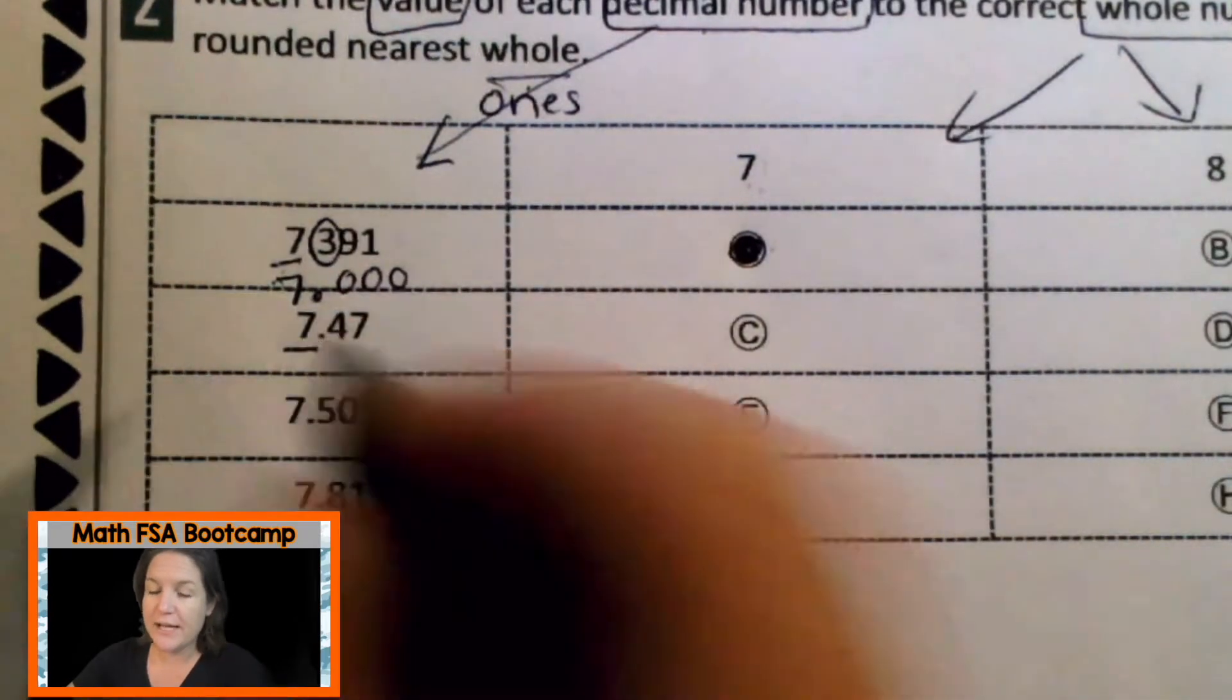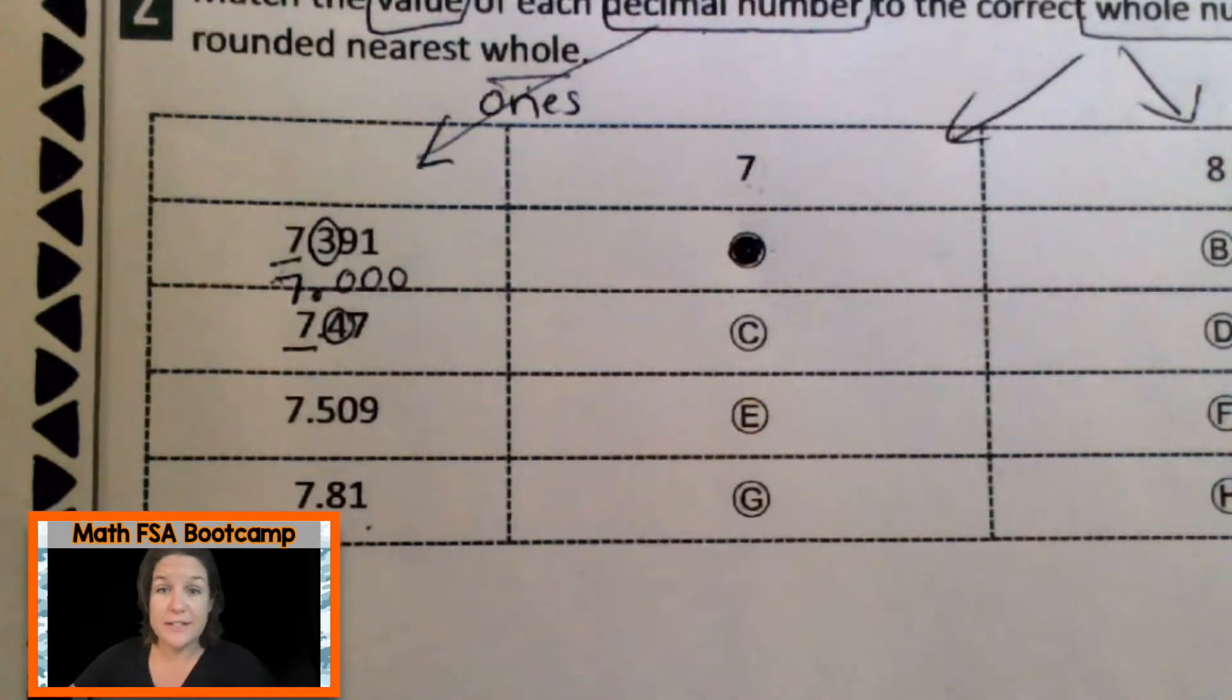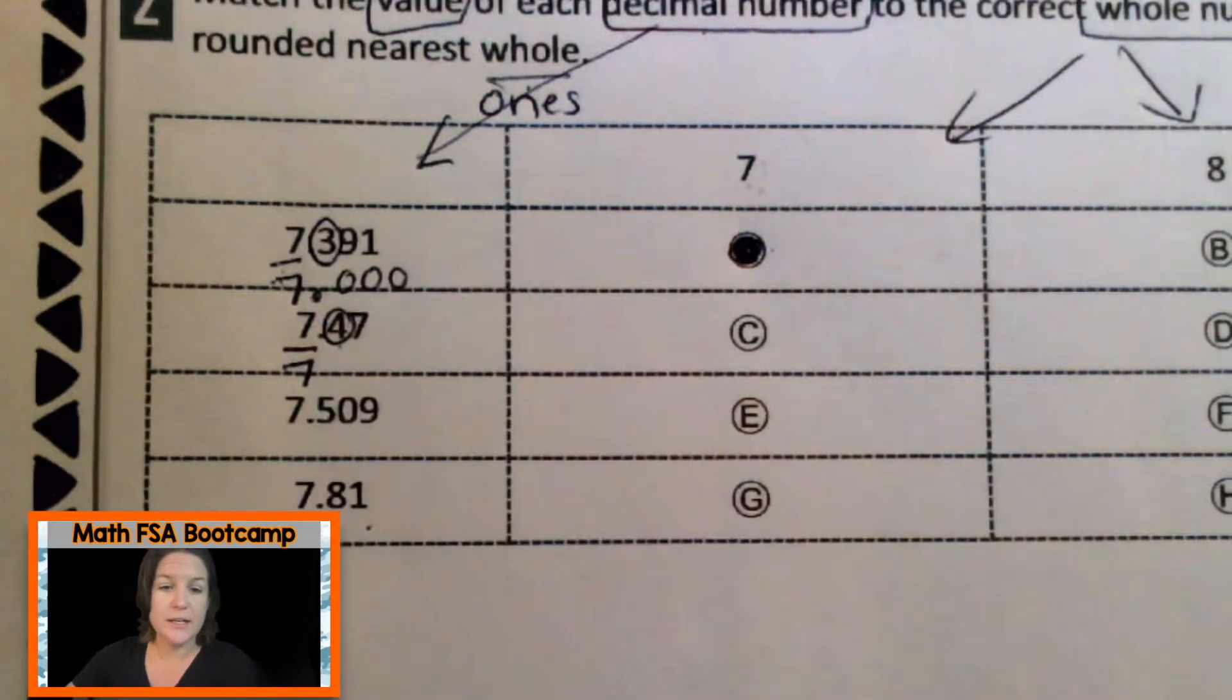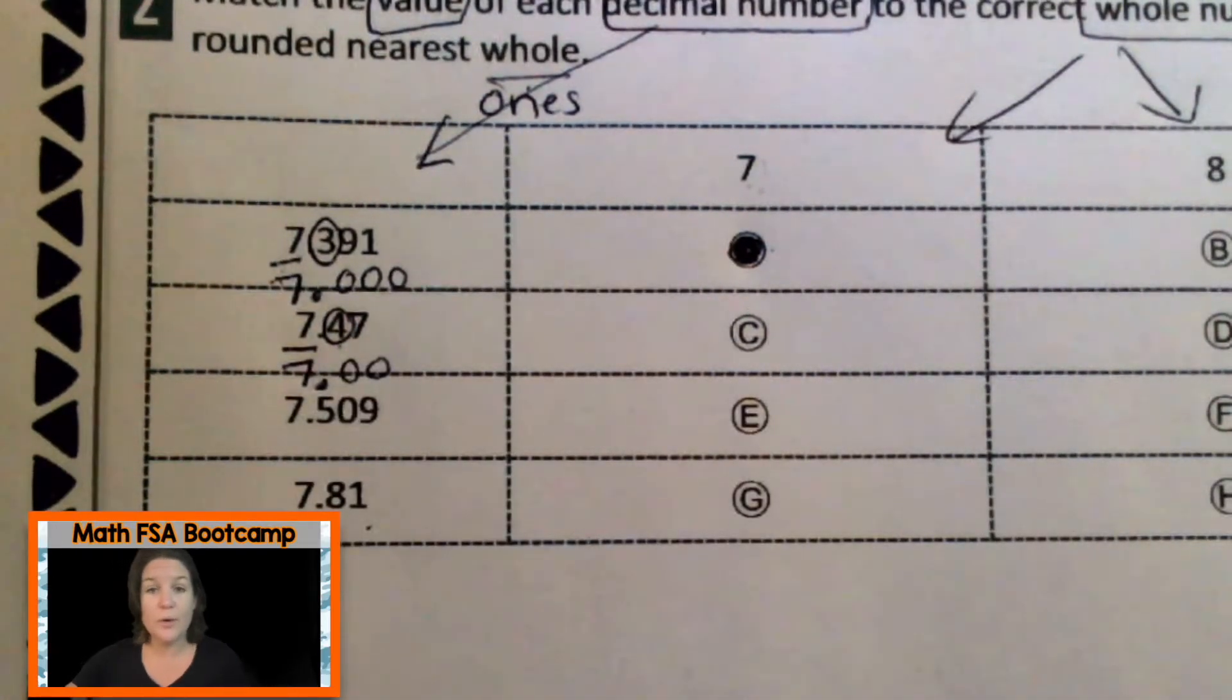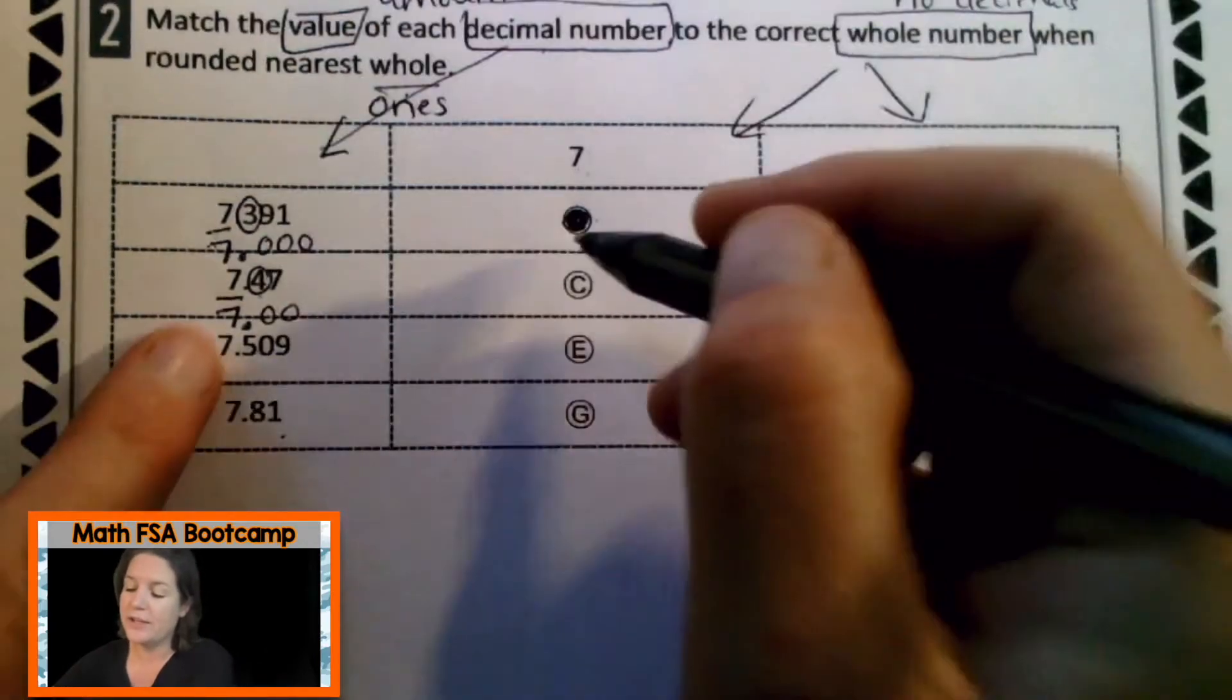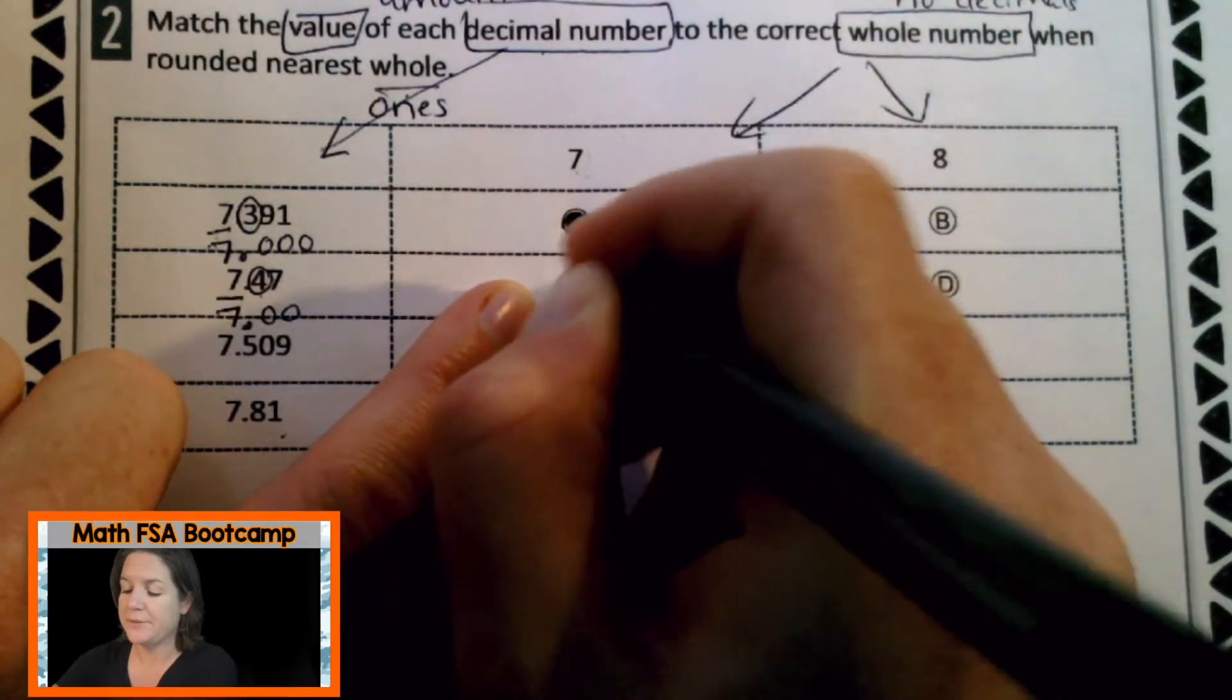Next. When you round, find and underline the place. Spotlight to the right, decide the digits fate. Well, this is four or less. So we just keep it the same and everything after becomes zero. Check me out now. I'm the rounding hero, which means that seven and 47 hundredths rounds to seven. C.